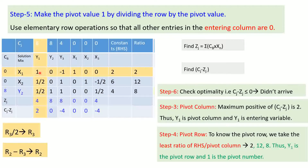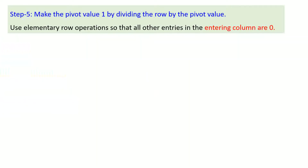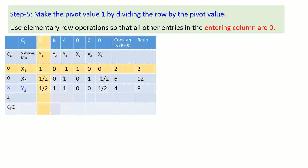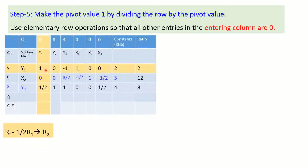We replace x1 with y1 and update the coefficient from 0 to 6. The pivot value is already 1, so no division is needed. Using elementary row operations to make all other values in the pivot column zero: R2 - R3 → R2 makes that position zero, and R3 - (1/2)R1 → R3 makes that position zero as well. After these operations, we get the updated tableau.